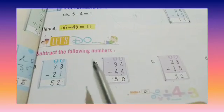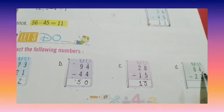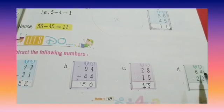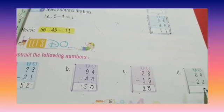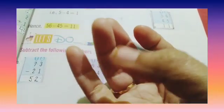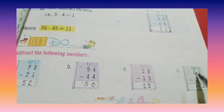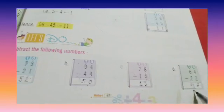We have done part A, B, C. Now part D. Part D is 64 minus 22. So 4 minus 2 is 2. Now 6 minus 2, 3, 4, 5, 6, is 4. So the answer is 42. 64 minus 22 is 42.